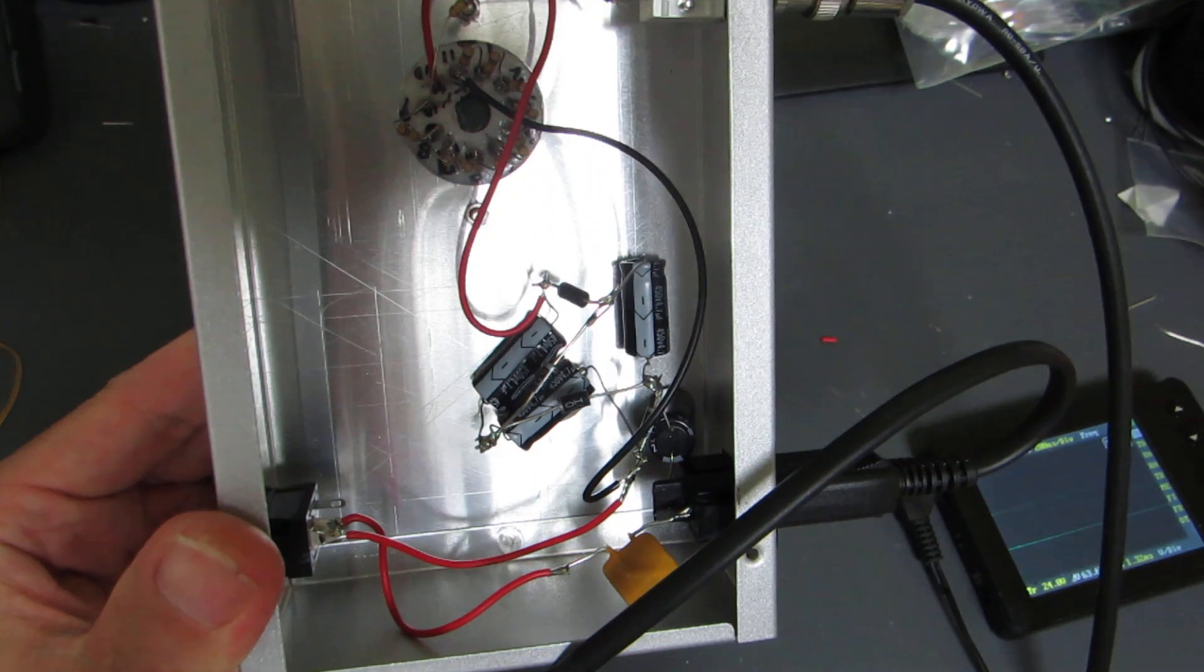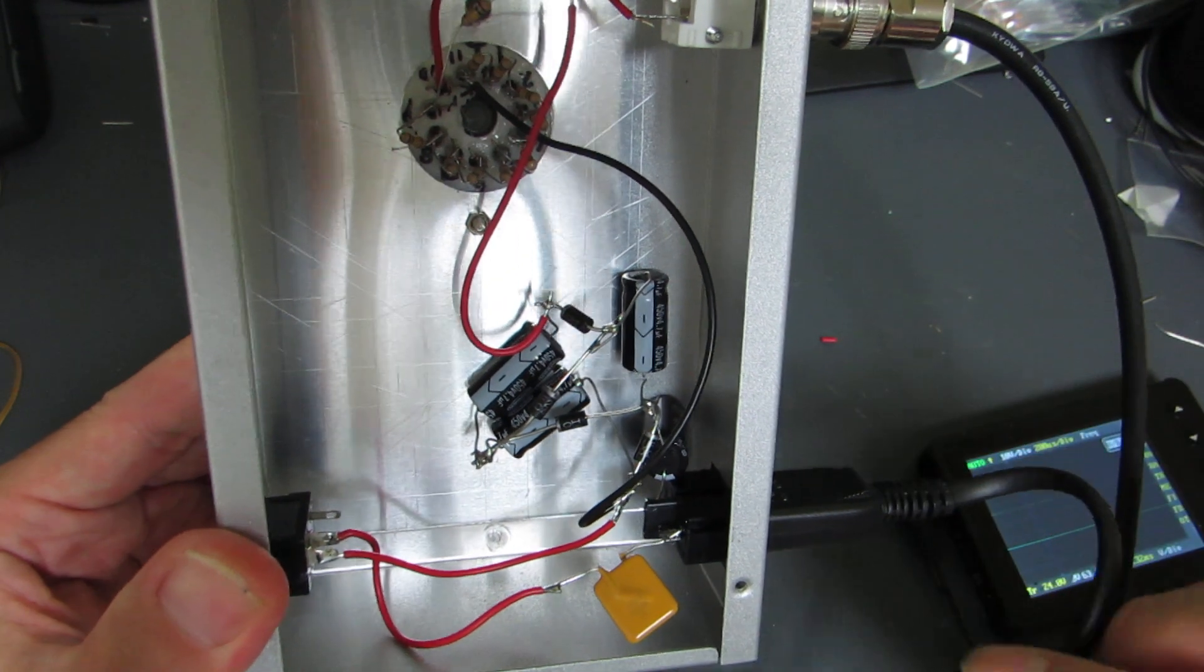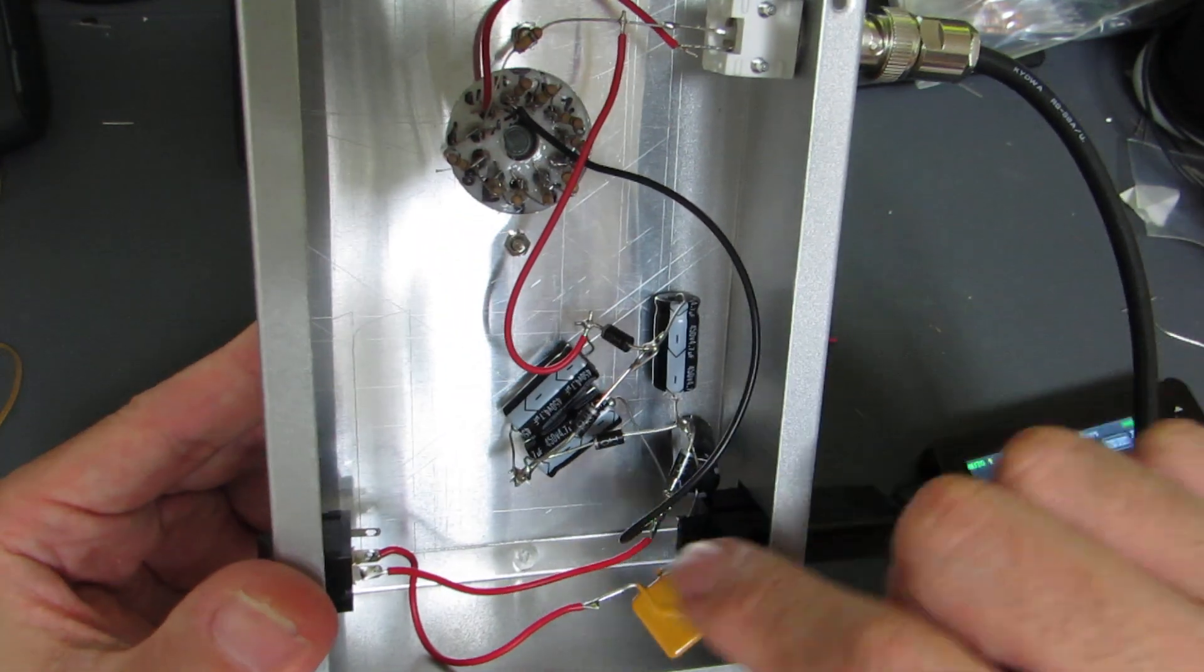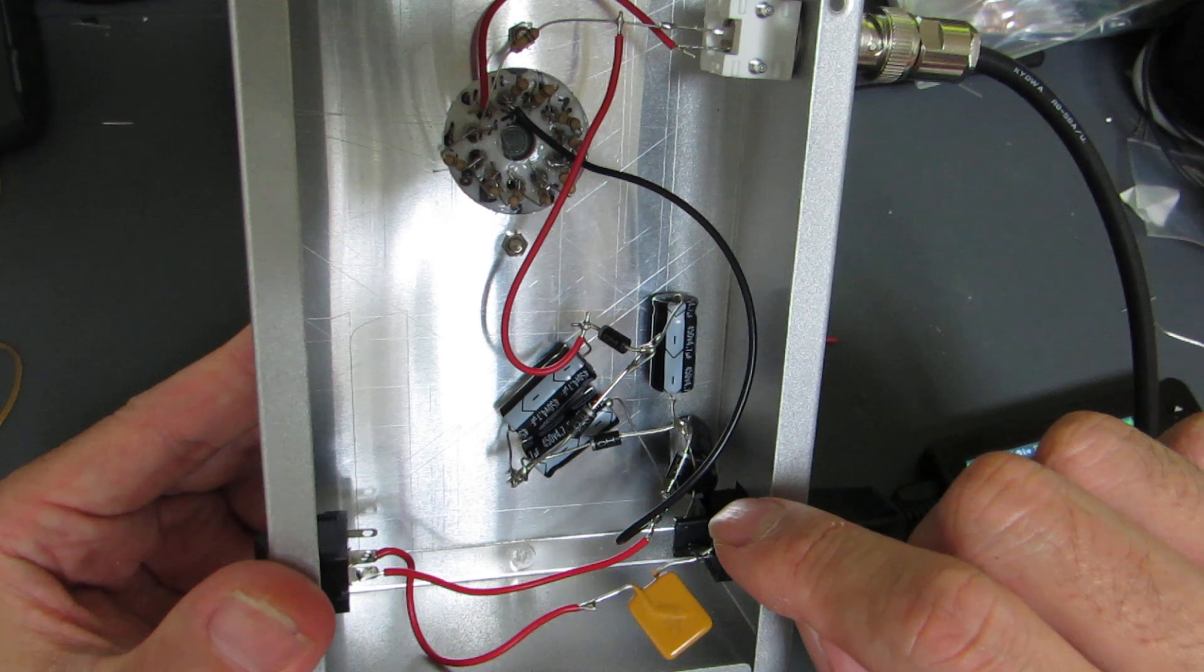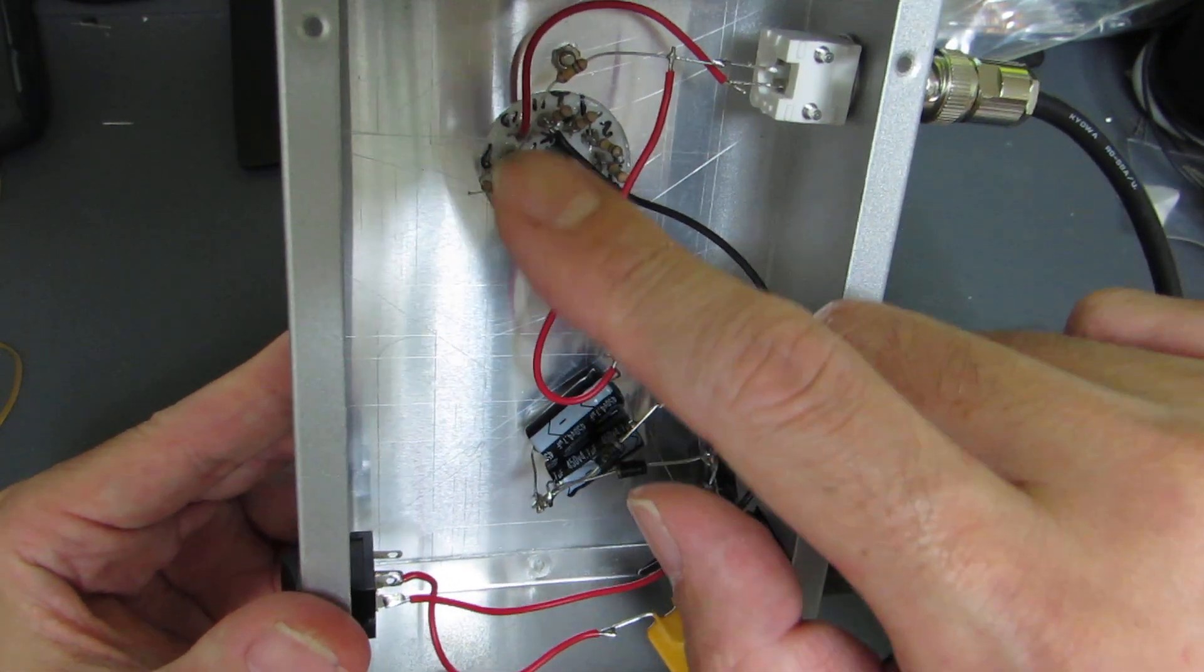This time I made a voltage tripler. From 100 AC, this circuit generates around 560 volt DC, and this is directly applied to the photomultiplier.